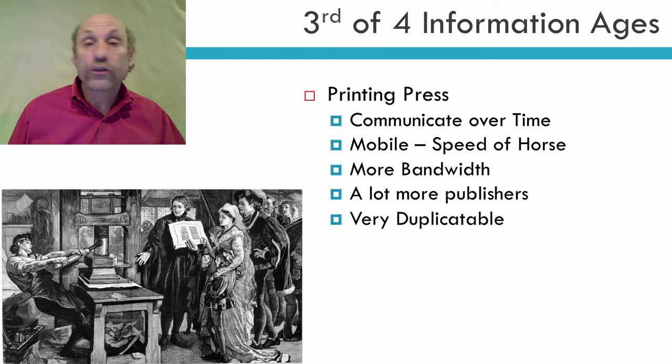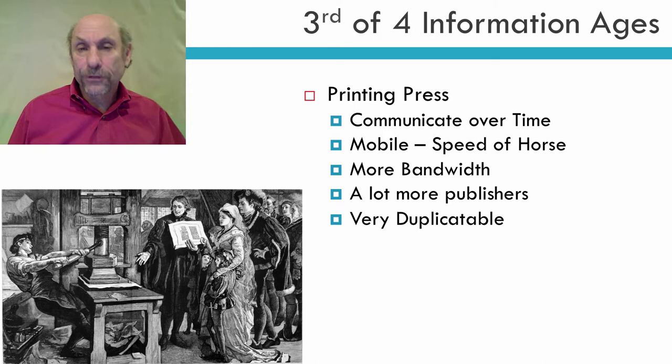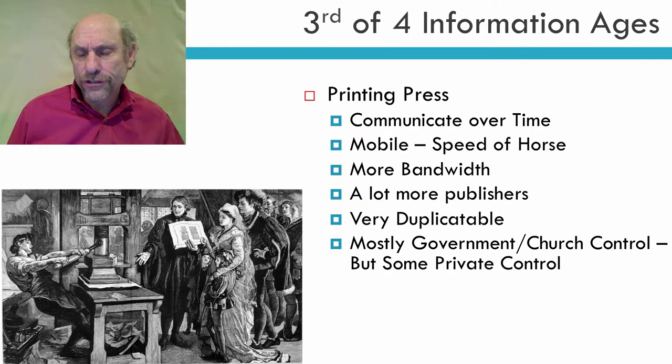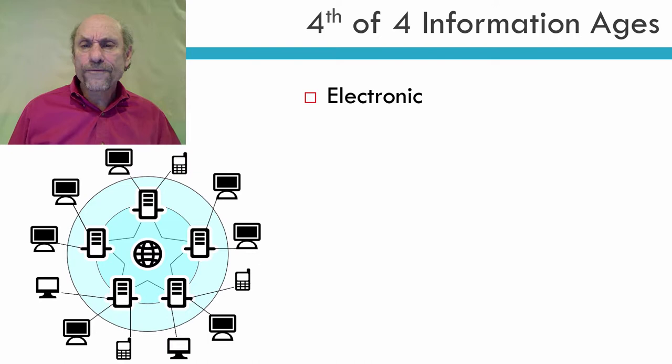A book is very duplicatable — once you have printed a book, you can print multiple copies. And frankly, that's one of the reasons for the Age of Enlightenment: now scientists were able to write and publish their books, and people were able to read the original. They didn't have to worry about how things were changed in the duplication. Printing presses were still mostly government-controlled, but there was some private control. And this, frankly, was what many people say created the Reformation — the Catholic Church at the time was losing control of all these printing presses, and people were printing their own Bibles.